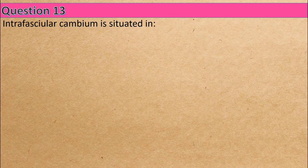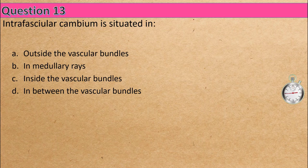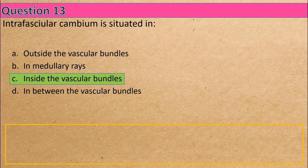Question 13: Intrafascicular cambium is situated in — Option A: outside the vascular bundles, Option B: in medullary rays, Option C: inside the vascular bundles, Option D: in between the vascular bundles. The correct answer is Option C: inside the vascular bundles.